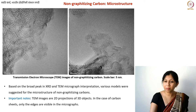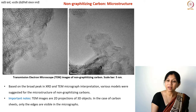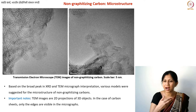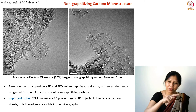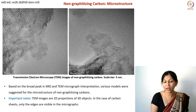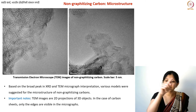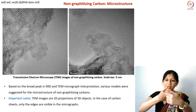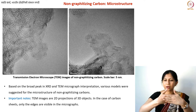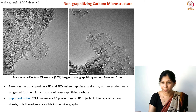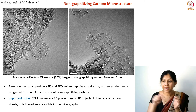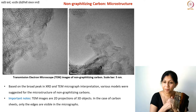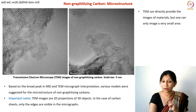You use TEM micrographs and also X-ray diffraction patterning to understand the microstructure. Remember two things about TEM: first, these are 2D projections of a 3D object. Second, specifically for carbon — which is rather transparent to most electromagnetic radiation — you only see the edges of your carbon structures. Whether you call them graphene sheets or sheets with defects, you only see the edges. This is why you see these line-line-line structures in TEM images.